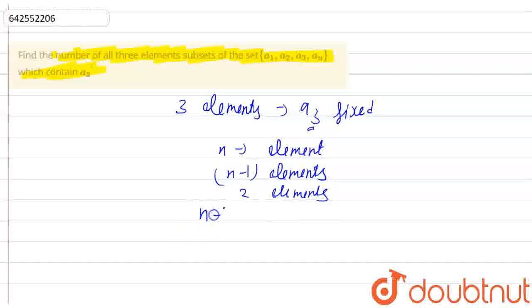So by this, we have to choose two elements from N-1, as one is fixed. So that is our answer for this question. That is N-1 C 2.